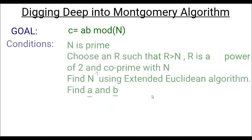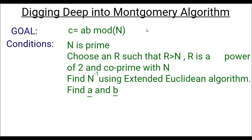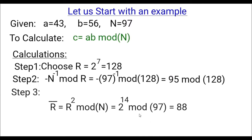When digging into the Montgomery algorithm, our goal is to calculate a^b mod n, where a and b are numbers and n is a modulus. We choose an r such that r > n, r is a power of two, and r is co-prime with n. In future slides we'll see how r is chosen and how the Montgomery algorithm functions. Consider an example: two numbers 43 and 56 with n = 97.